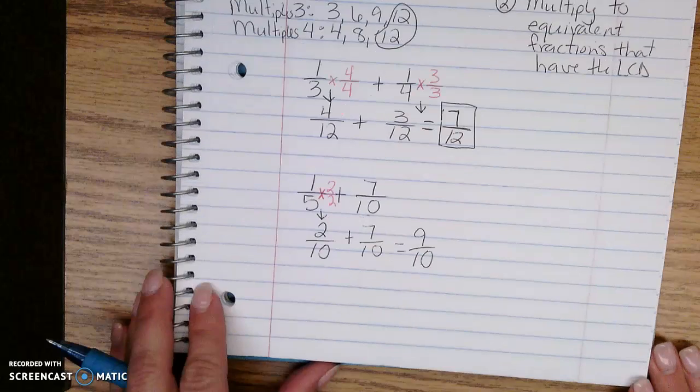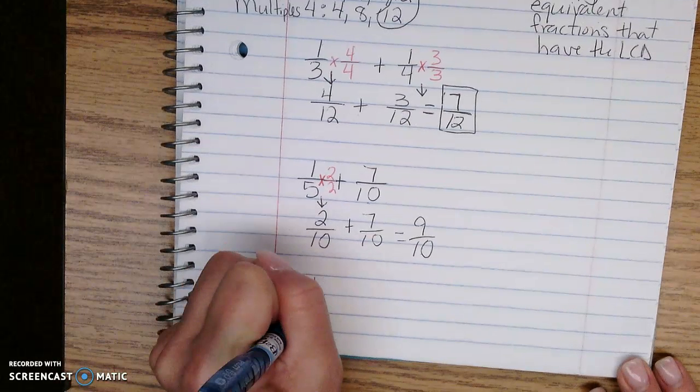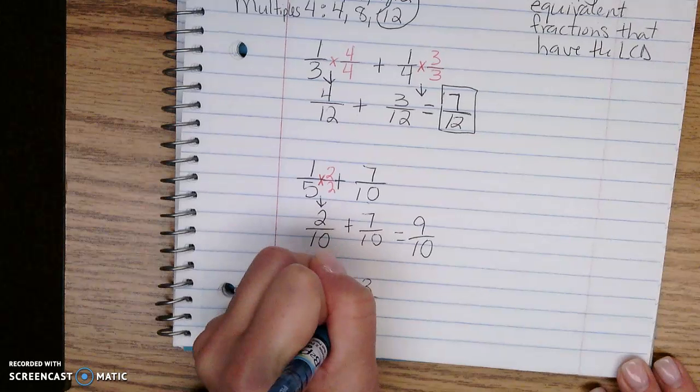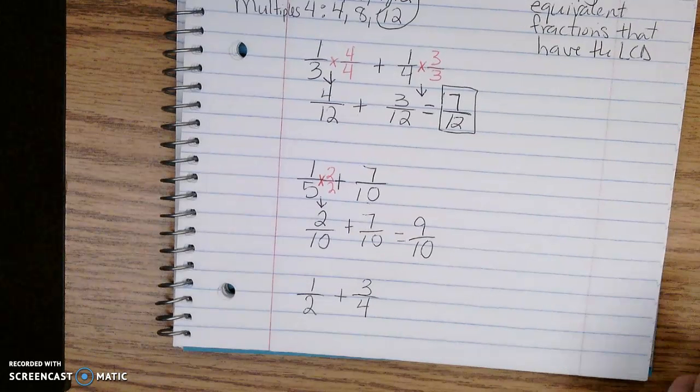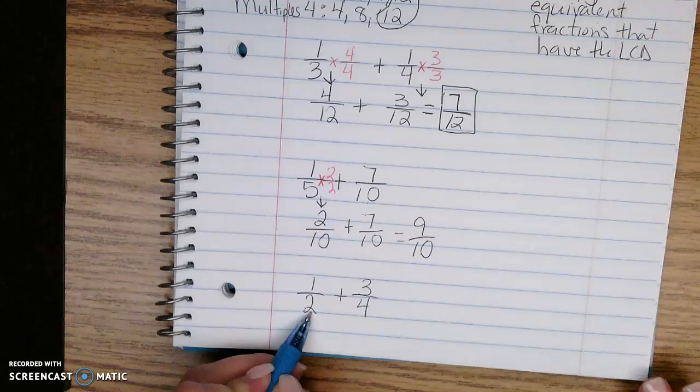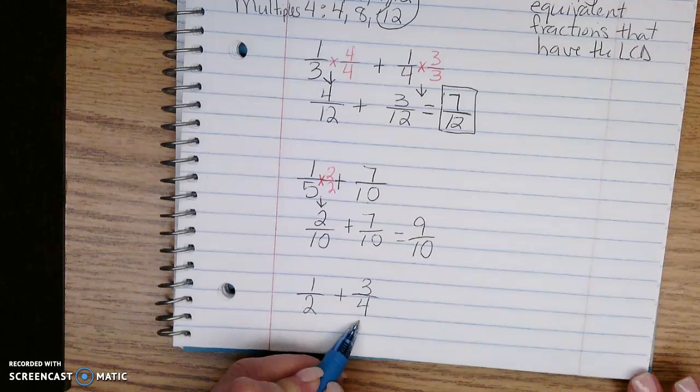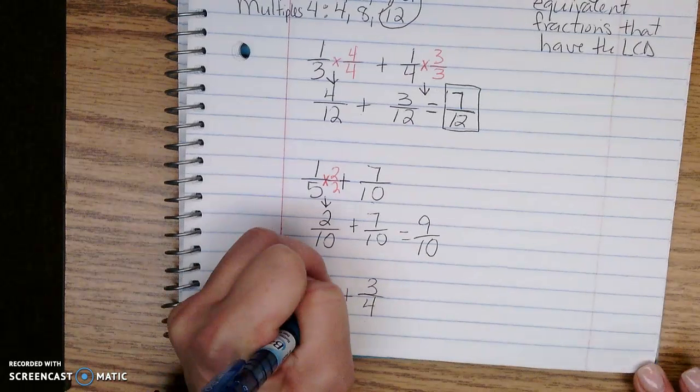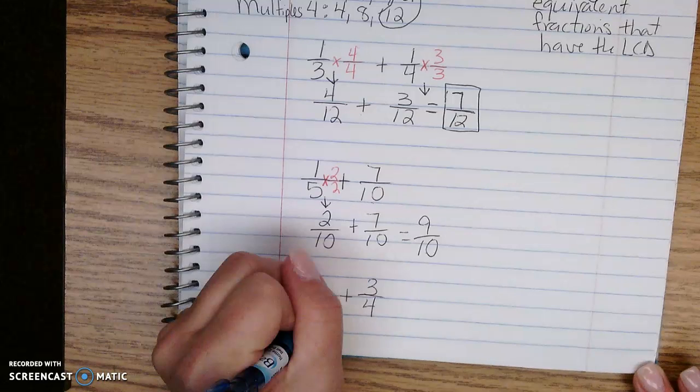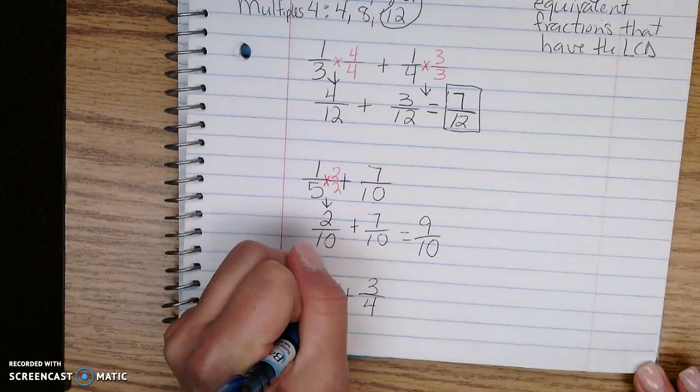We're going to do one more. What if I had 1/2 plus 3/4? I look at my smaller denominator 2. 2 can become 4, so I'm going to use that. In order to make 2 become a 4, I have to multiply by 2 over 2.